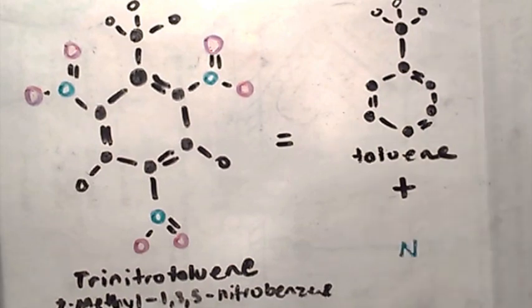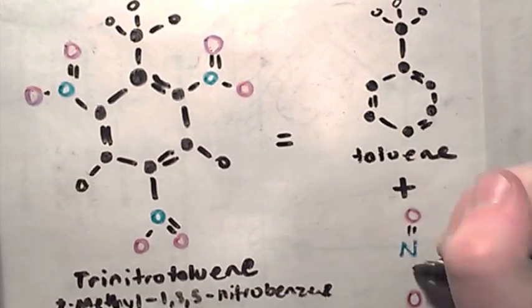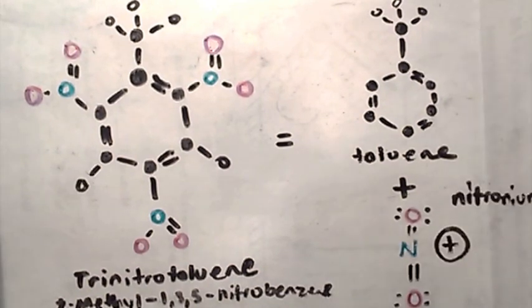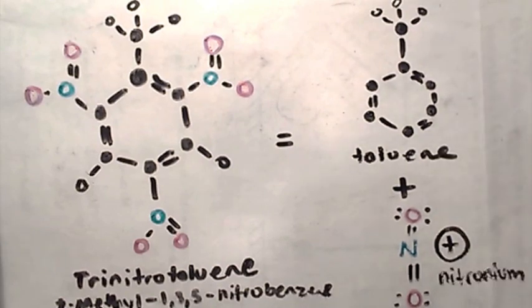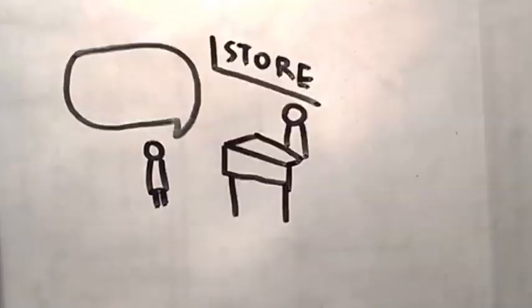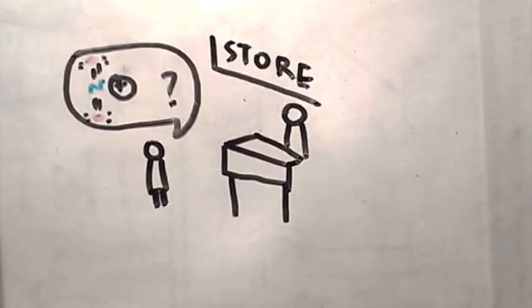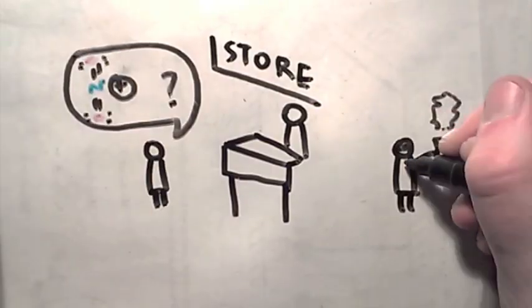The second, that which accounts for these three little twiggy bits on the side, is a batch of positively charged nitronium ions. Unfortunately, nitronium ions do not occur naturally, and nor can you buy them from a store, so we're just going to have to make some ourselves.